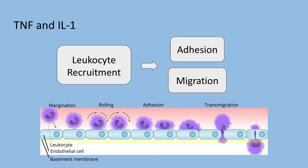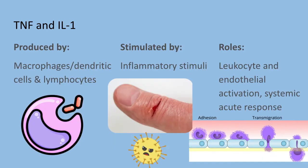Two predominant cytokines are tumor necrosis factor and interleukin-1. They both have critical roles in leukocyte recruitment by promoting adhesion of leukocytes to the endothelium and their migration through vessels. These cytokines are produced mainly by activated macrophages, lymphocytes, and dendritic cells, but also by endothelial, epithelial, and connective tissue cells. Their secretion can be stimulated by microbial products, immune complexes, foreign bodies, and physical injury — all forms of inflammatory stimuli.